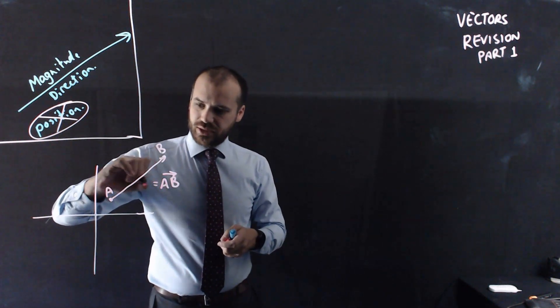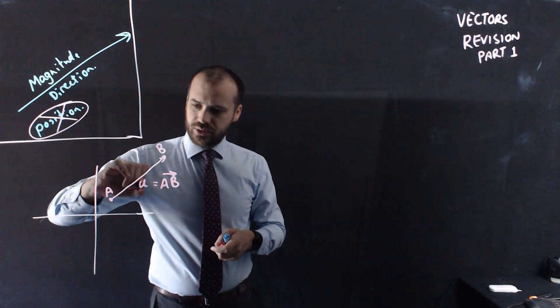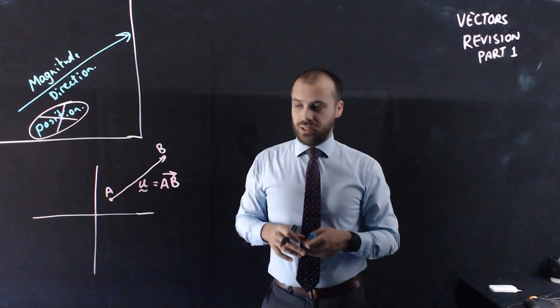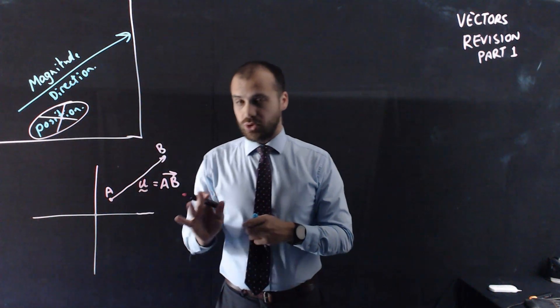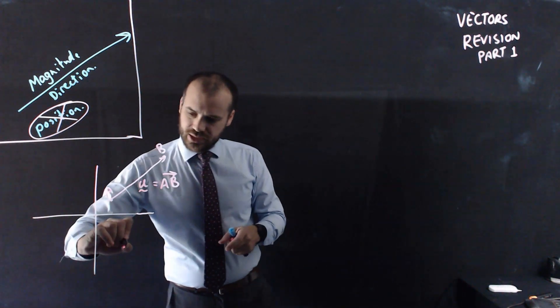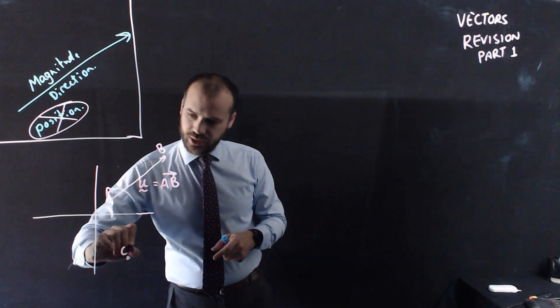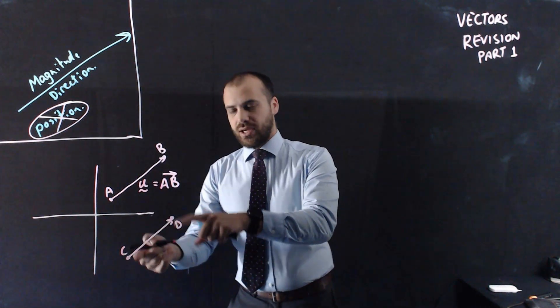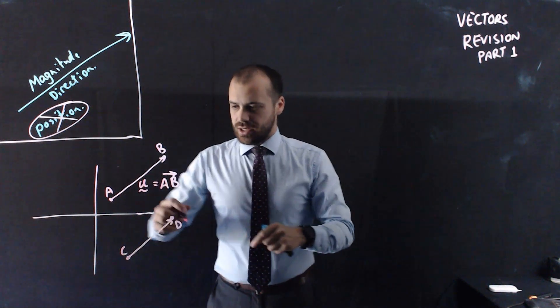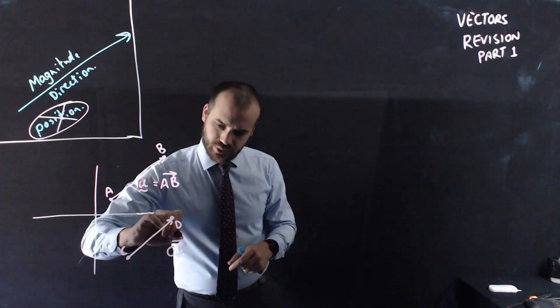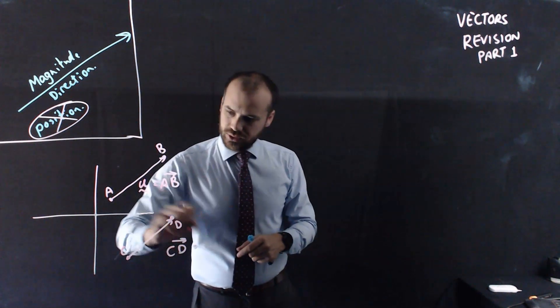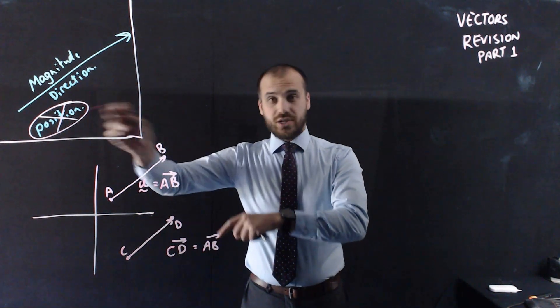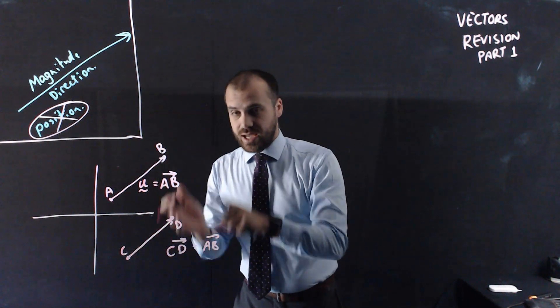Now, usually, when you've got a vector the way that you denote it is with the letter U and like a little line underneath it. So, vector U in this case is AB with an arrow above it. So, I can say that another vector C, I'll draw it there, D. You can see CD is the same length as AB, it's parallel to AB, so I can say that this vector CD with a little arrow above it is equal to vector AB. Same magnitude, same direction, different position, but I don't care, they're the same vector.